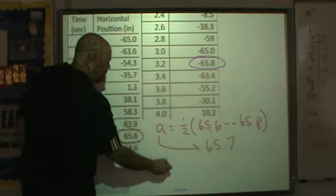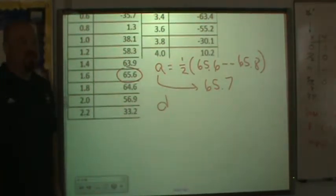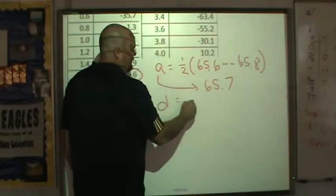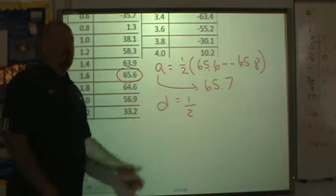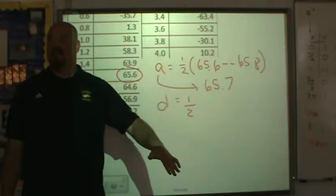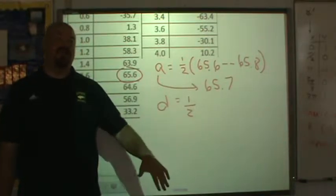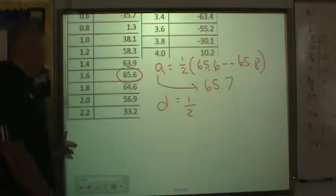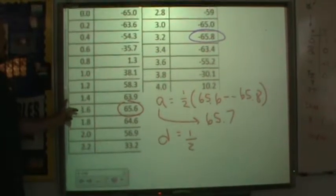We can identify our vertical shift based on these values. The vertical shift, we said, is that equilibrium value, that soft middle, that point that is the same distance away from the max as it is from the min. Now, let's talk about how we might be able to do that from the table.